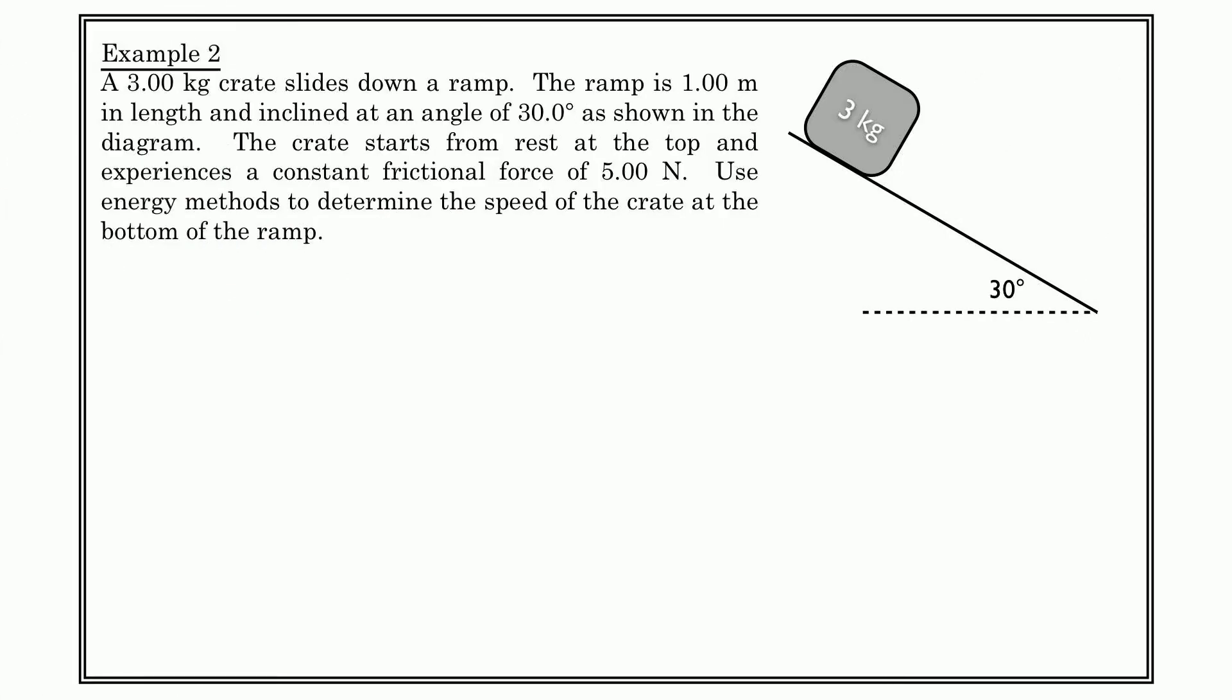All right, so now we introduce a plane, or a ramp. And we have a three kilogram crate, and it slides down a ramp. The ramp is one meter in length. It has an angle of inclination of 30 degrees, and we've got a little diagram of it here. The crate starts from rest and experiences a constant frictional force of five newtons. So we're not going to worry about calculating the normal and stuff like that, we're not going to worry about that. We're just saying that the force of friction is five newtons.